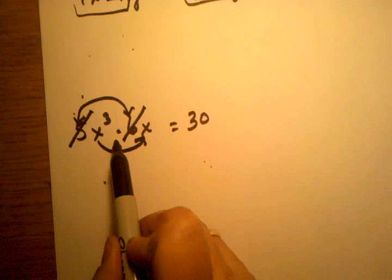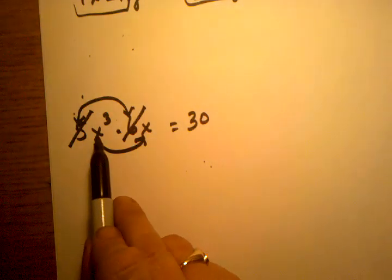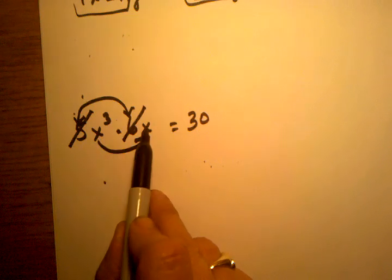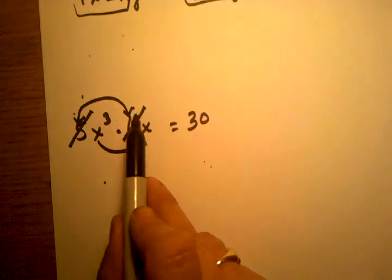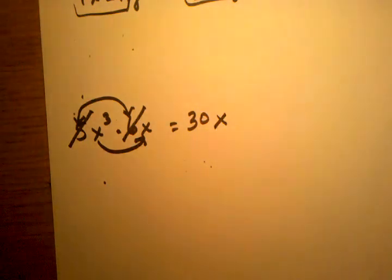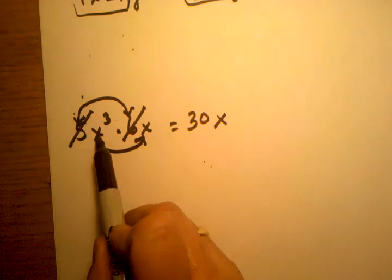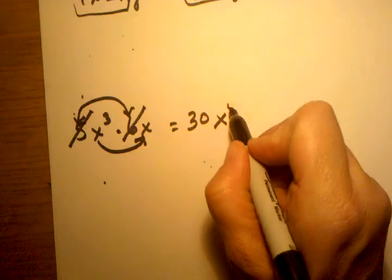Then we have x cubed times x. Well, when we were working with exponents, we knew that when you're multiplying x's with different exponents, you can just simply add the exponents. And the reason why that works is because we're saying how many x's you're multiplying to get your final answer. Well, here we're multiplying 3 x's. Here we're multiplying 1 x. So that means we're multiplying a total of 4 x's.